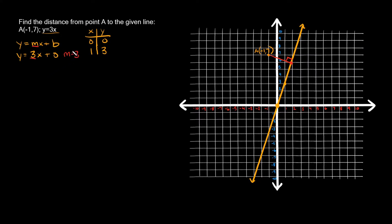Now, to find the slope of the perpendicular line, you take the opposite reciprocal of the original slope. The original slope is 3, or 3 over 1. The opposite reciprocal means we flip the sign and invert the fraction — so since it's positive 3, the perpendicular slope is negative 1 third.